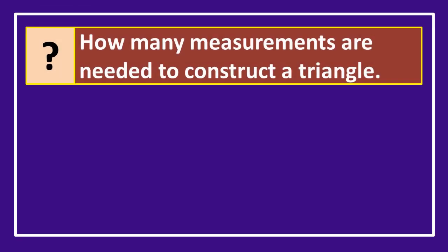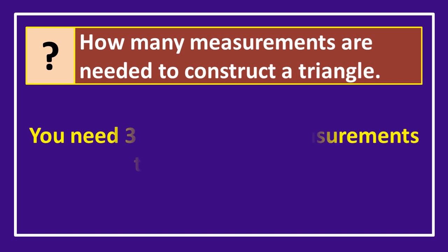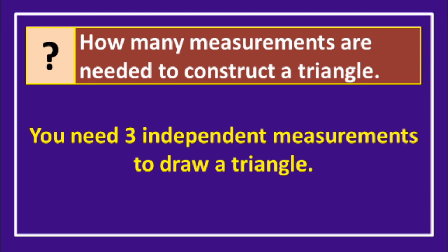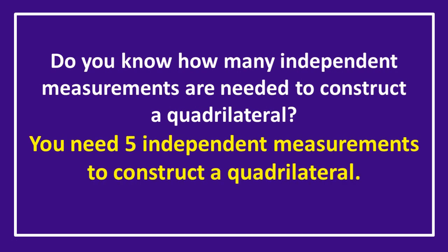We have already learnt the number of independent measurements required to construct a triangle. Can you recollect it? Yes, you need 3 independent measurements to draw a triangle. Now, do you know how many independent measurements are needed to construct a quadrilateral? We need 5 independent measurements to construct a quadrilateral. Let us see what those independent measurements are.